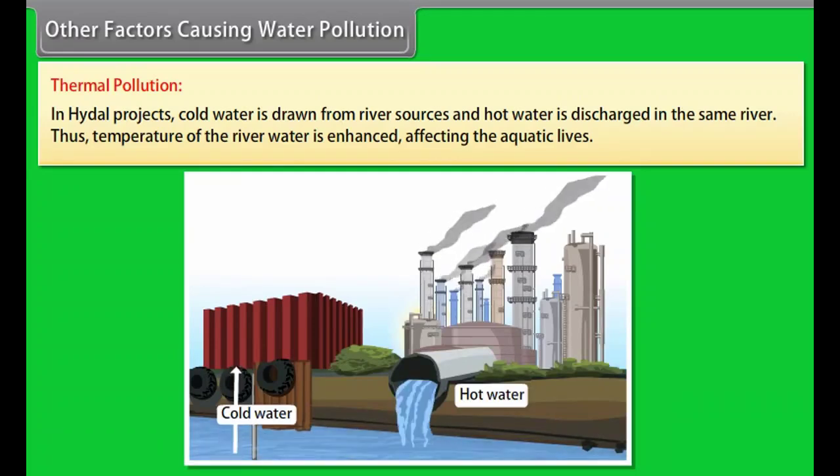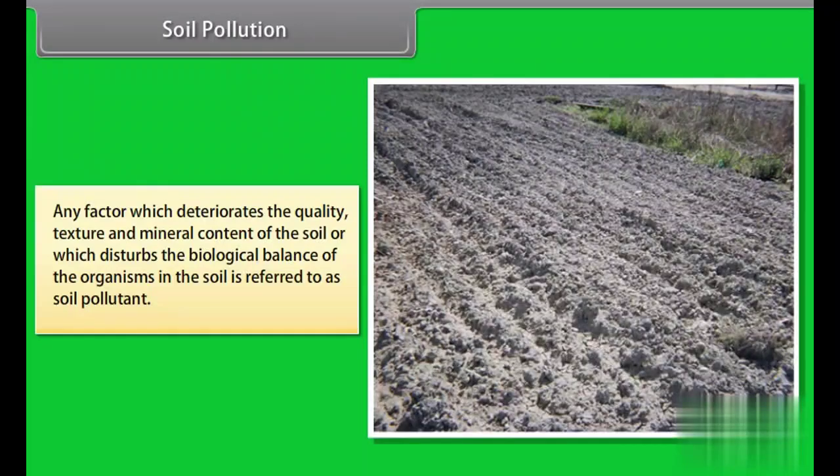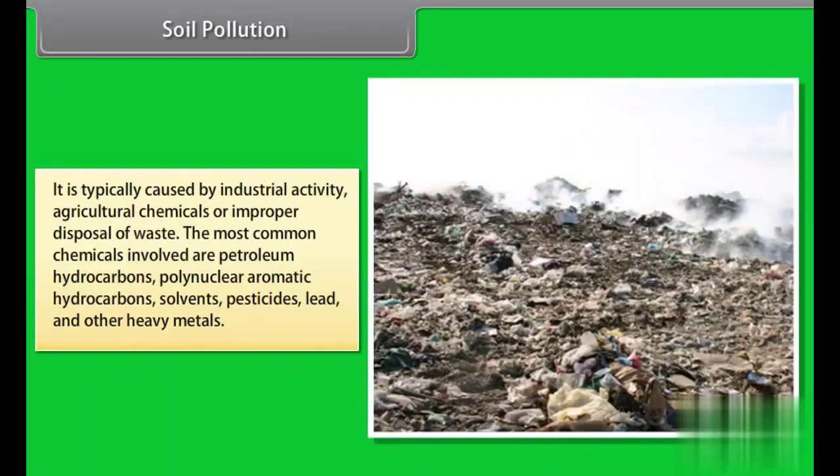Soil pollution. Any factor which deteriorates the quality, texture, and mineral content of the soil or which disturbs the biological balance of the organisms in the soil is referred to as soil pollutant. It is typically caused by industrial activity, agricultural chemicals, or improper disposal of waste. The most common chemicals involved are petroleum hydrocarbons, polynuclear aromatic hydrocarbons, solvents, pesticides, lead, and other heavy metals. Soil pollution has adverse effect on the plant growth.